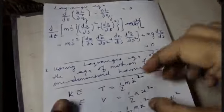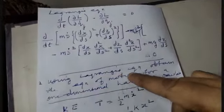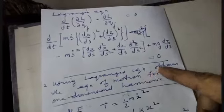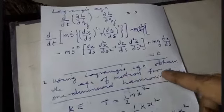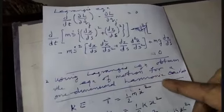Another question: using Lagrange's equation, obtain the equation of motion for a one-dimensional simple harmonic oscillator.